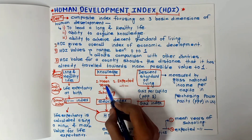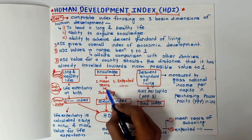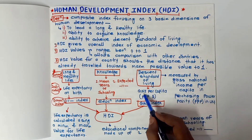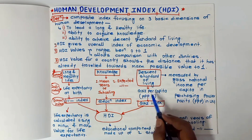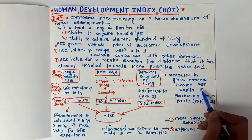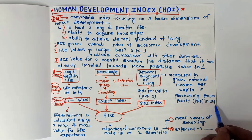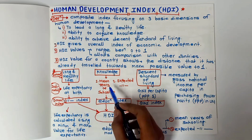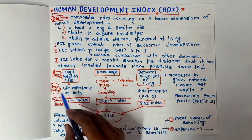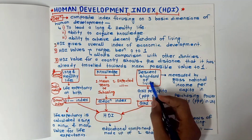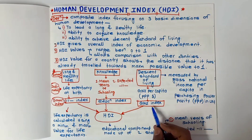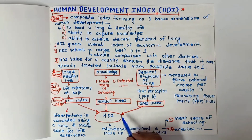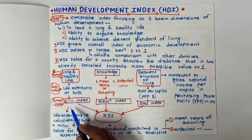For knowledge, there are two indicators: mean years of schooling and expected years of schooling. For decent standard of living, we have GNI per capita in PPP — that is Gross National Income per capita in Purchasing Power Parity in US dollars. Life expectancy gives the Life Expectancy Index; the two knowledge indicators give the Education Index; and GNI gives the GNI Index. By combining these, we get the HDI — the Human Development Index.